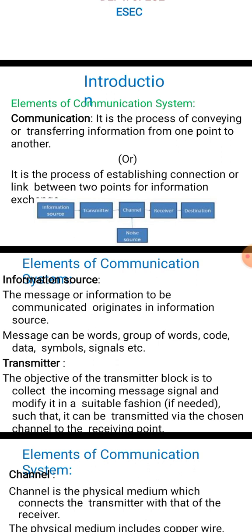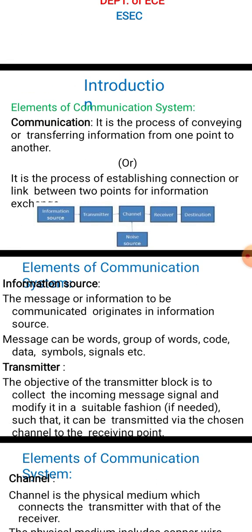Analog signals are time-varying signals in terms of both voltage and current — continuously changing. Sine and cosine waves are examples of analog signals. Digital signals, on the other hand, are defined by changes in discrete steps or levels.